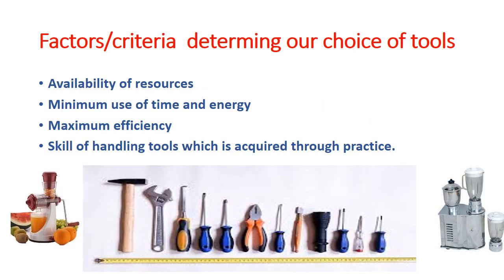Let us study the factors or criteria which determine the choice of tools. The first one is availability of resources, which means suppose you want to make a tool out of iron — the raw material, iron ore, is required in plenty; it should be available in plenty. The second one is minimum use of time and energy, meaning when we use a tool it should be time and energy saving.